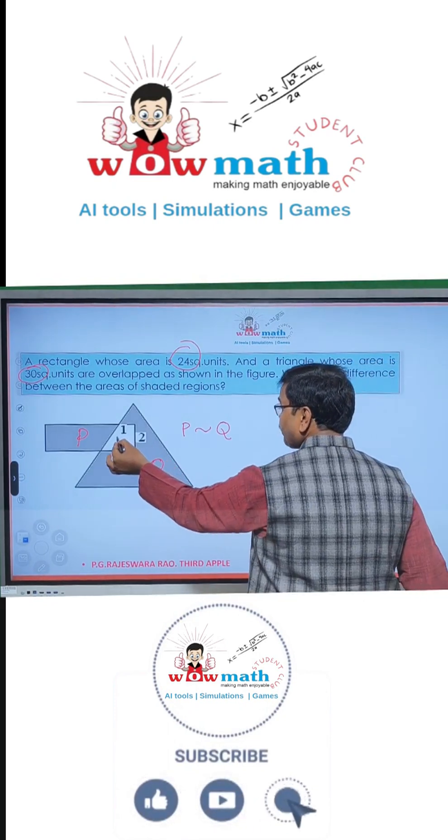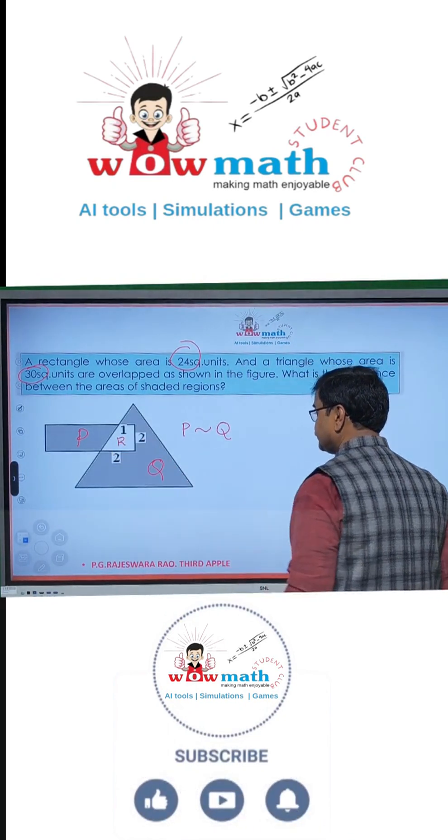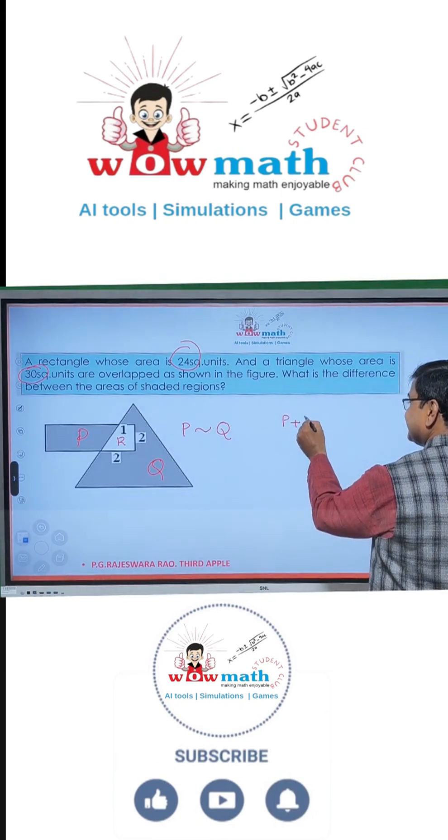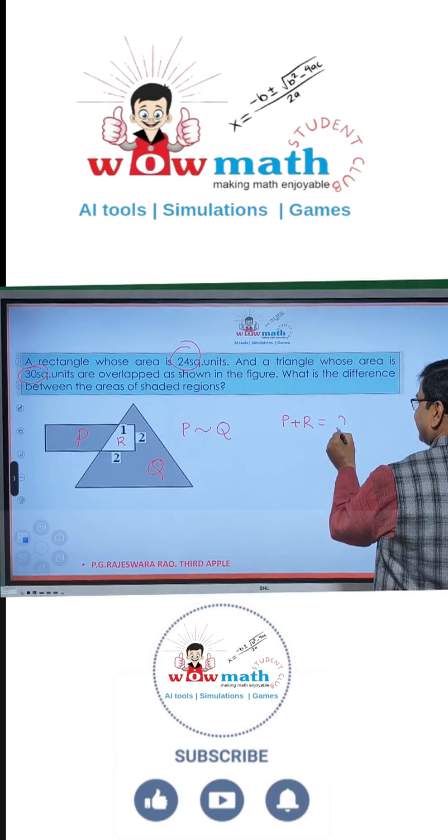Let us assume the overlapping area is R. So what is P plus R? Yes. Rectangle area, 24.